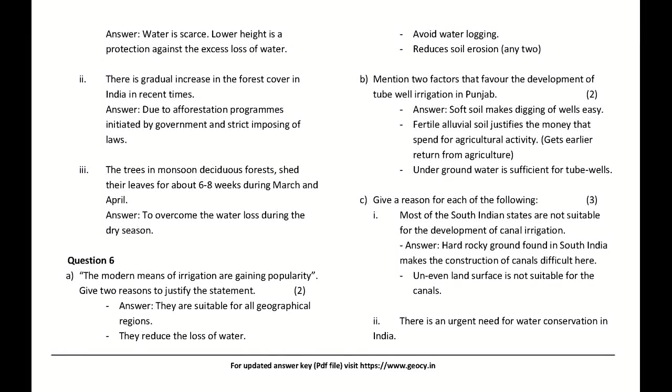The modern means of irrigation are gaining popularity. Give two reasons: They are suitable for all geographical regions, reduce the loss of water, avoid waterlogging, and reduce soil erosion — any two.